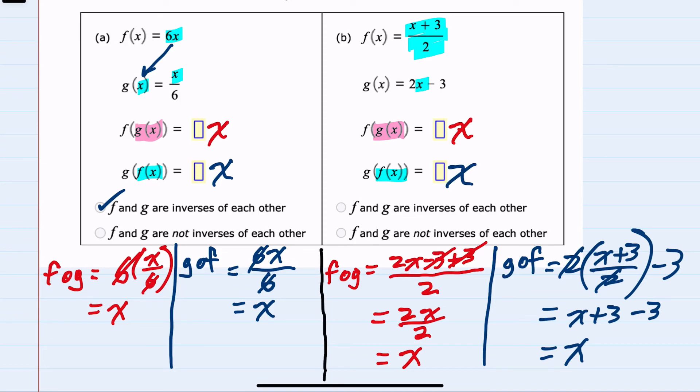So this is another example where f and g are inverses. And we can think of this for inverses as that one function is undoing the other function, and the result would be x whenever we find the composites.